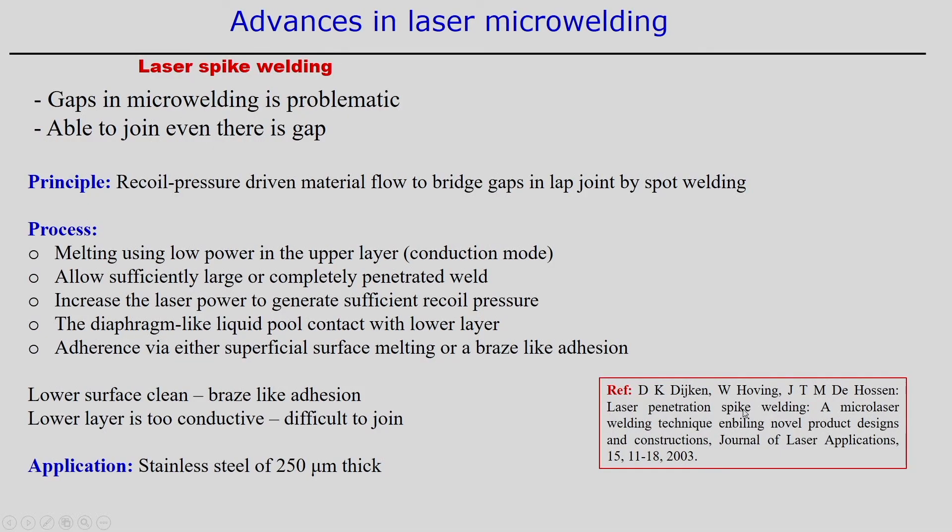Another development is laser spike welding, which has been developed for micro welding applications. Gaps in micro welding are always problematic, and laser spike welding enables joining even when a gap is present. This process uses recoil pressure-driven material flow to bridge gaps in the lap joint configuration. Two sheets can be joined by using the recoil-driven material flow from the top surface to bridge the gap between the two components.